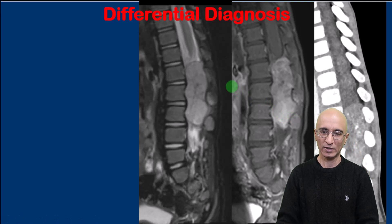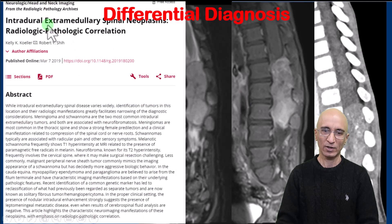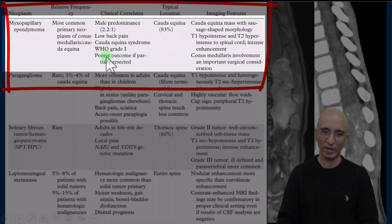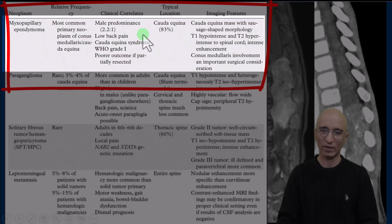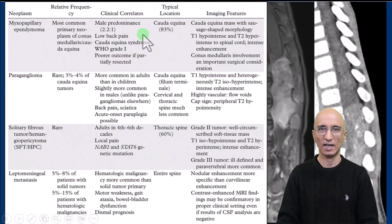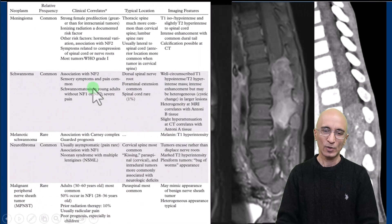In terms of differential diagnosis, there is a very informative Radiographics article on intradural extramedullary spinal neoplasms. For our patient, the most appropriate diagnosis to consider would be myxopapillary ependymoma, a tumor commonly seen in the cauda equina. In pediatric patients, other differentials include paraganglioma, meningioma, schwannoma, or neurofibroma.